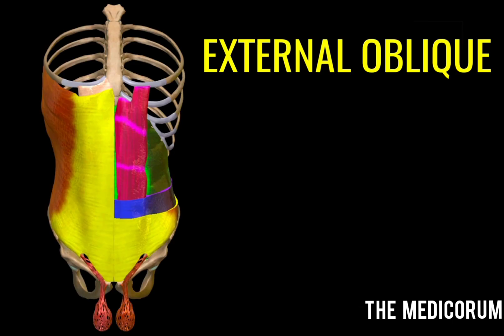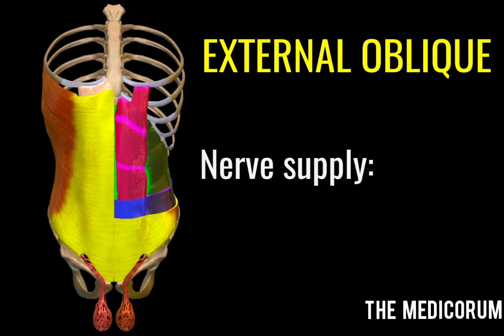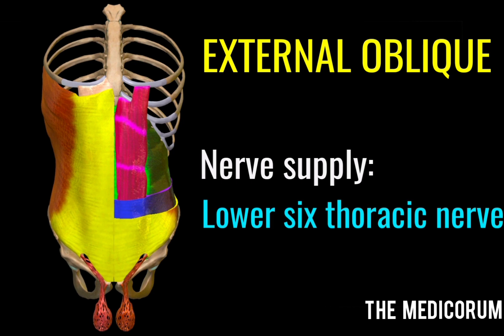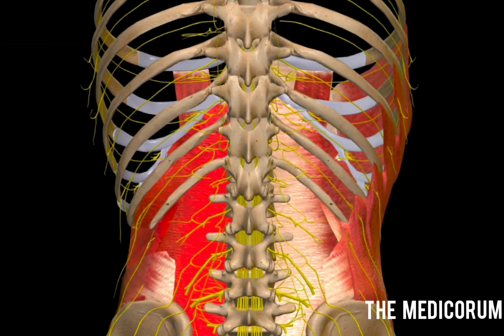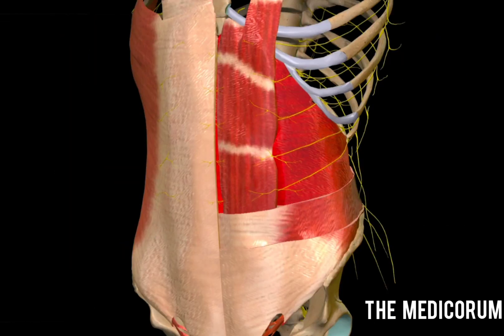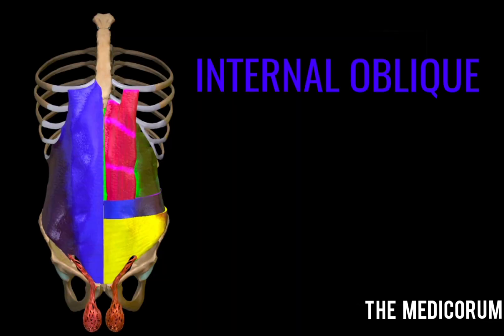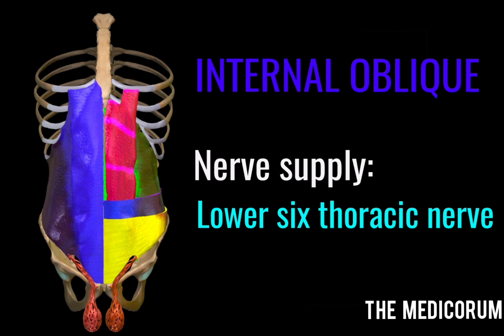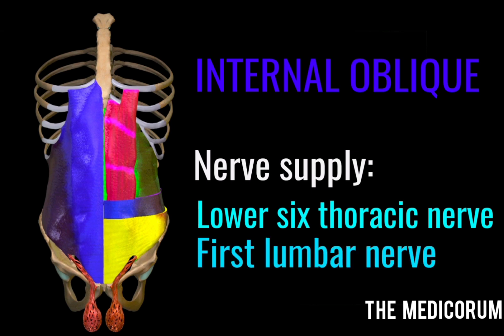The first muscle, as we saw, is the external oblique, and it is supplied by the lower sixth thoracic nerve. This is how the lower sixth thoracic nerve will look like. The second muscle is the internal oblique, and it is supplied by the lower sixth thoracic nerve and the first lumbar nerve.